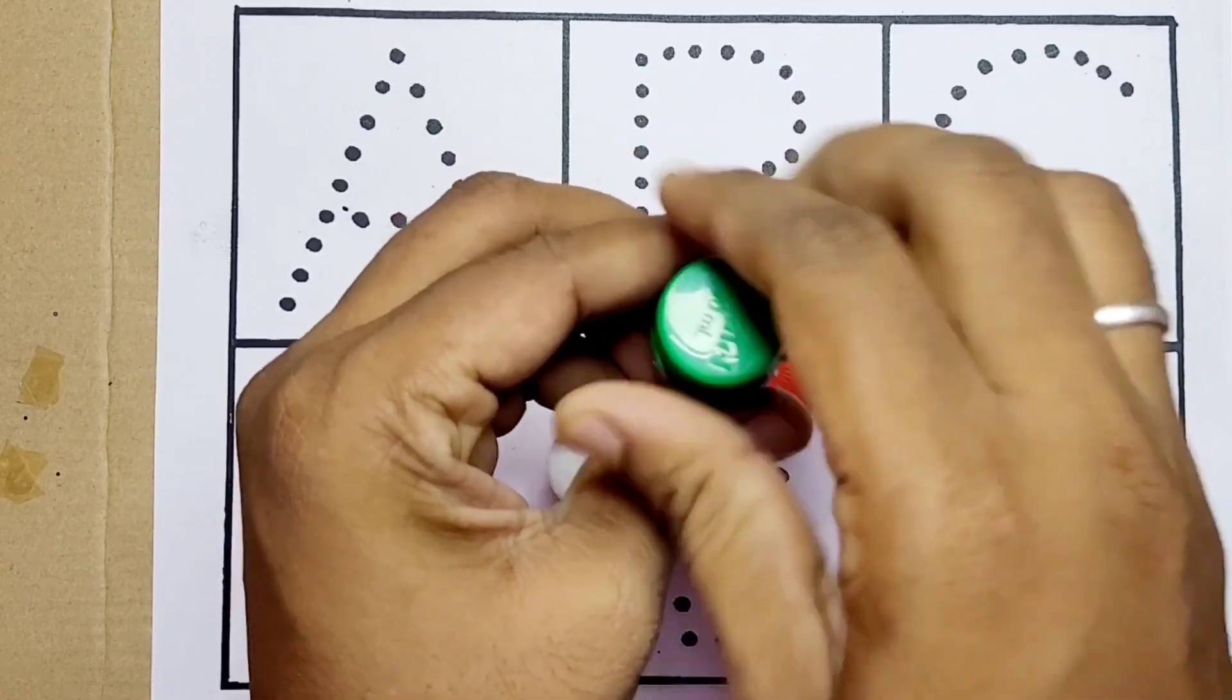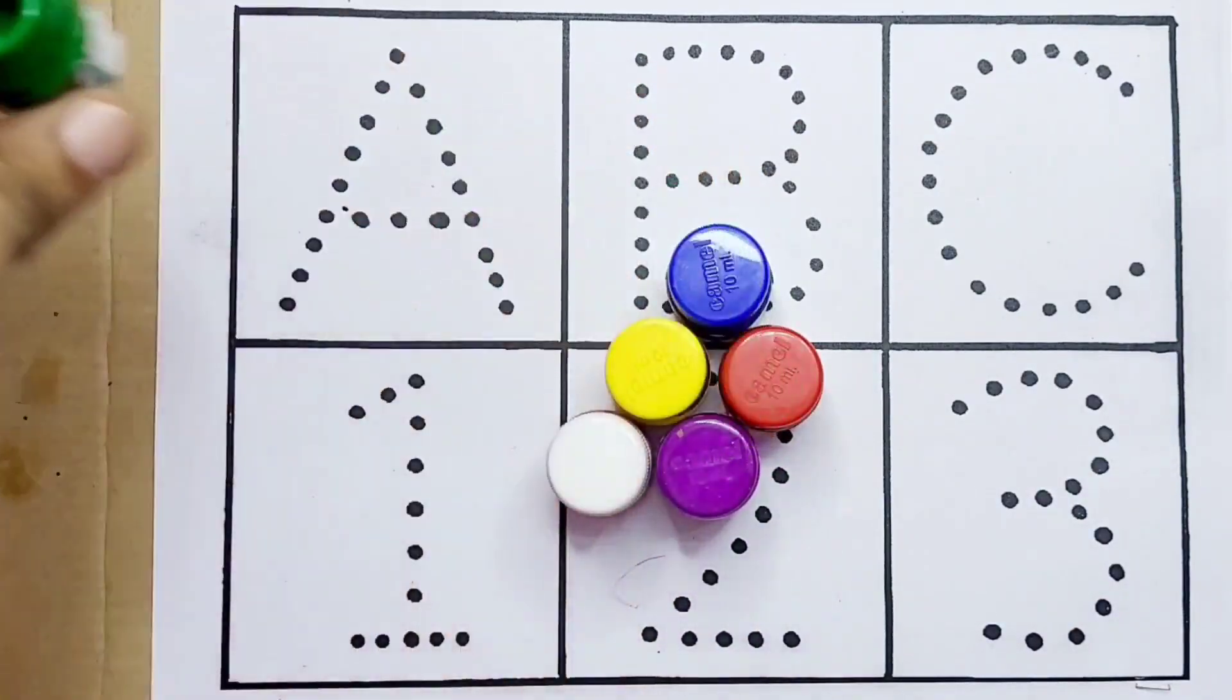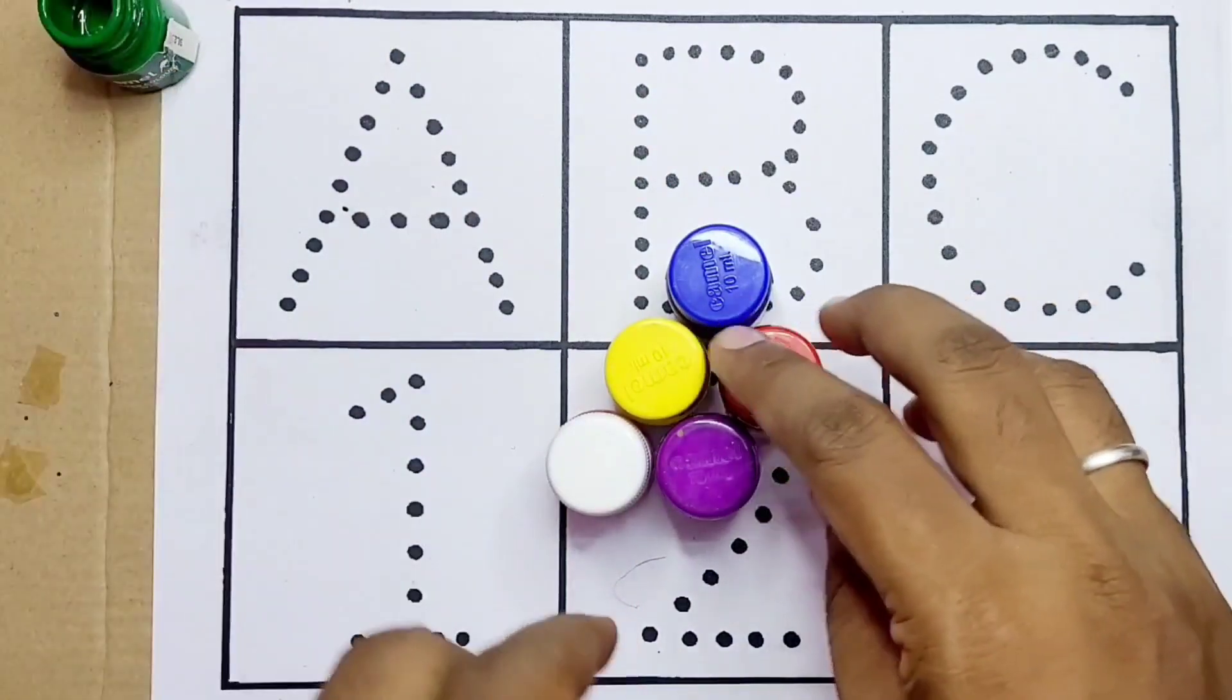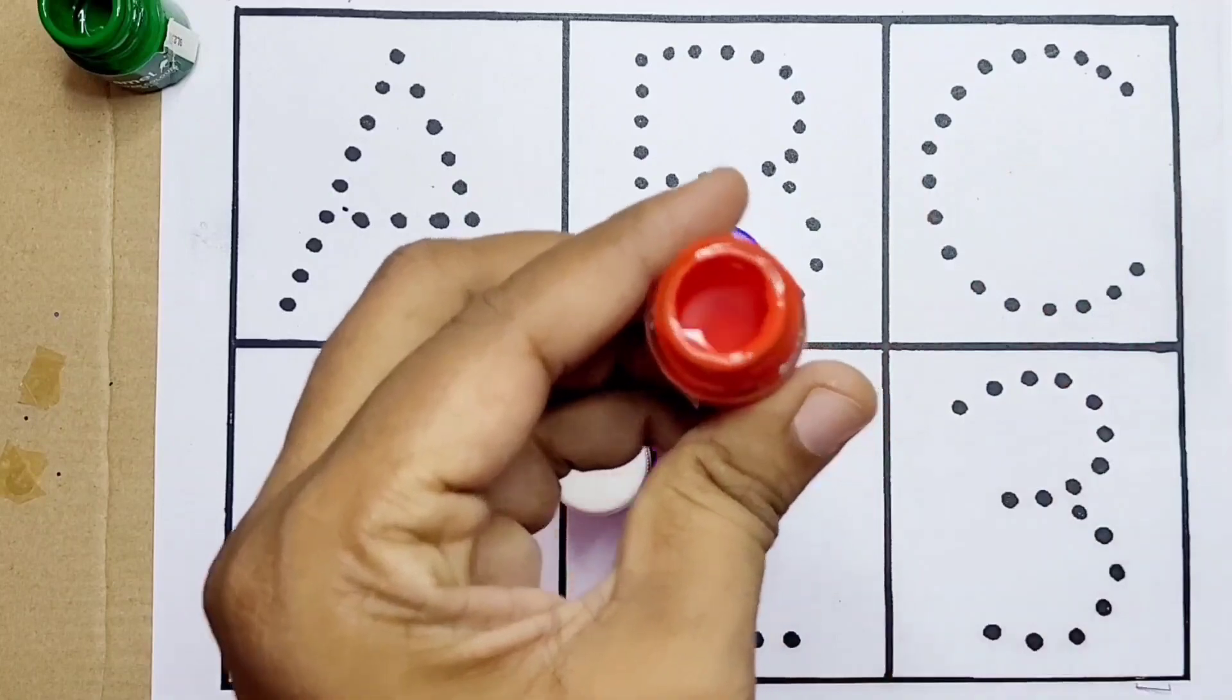Let's see the colors kids. This is green color, this one is green. Next to that, red color kids, this is red.